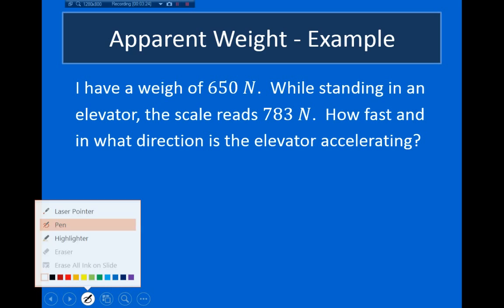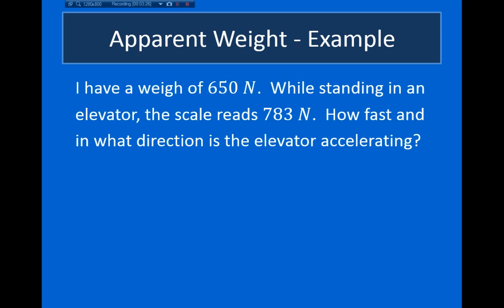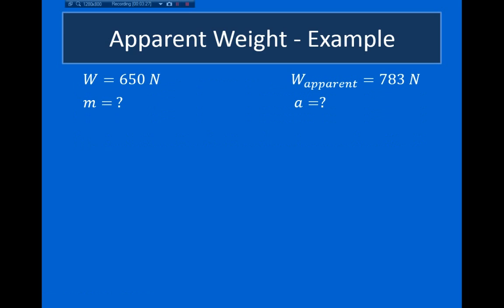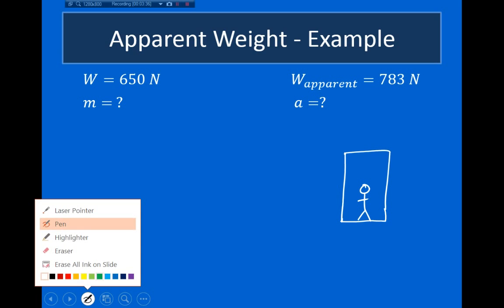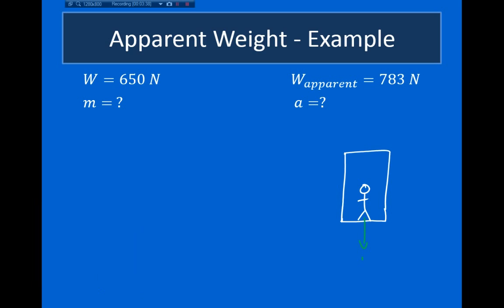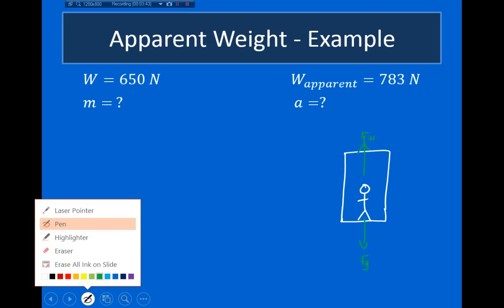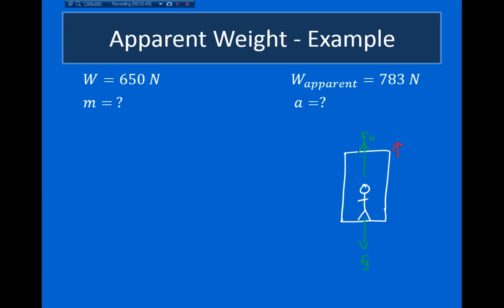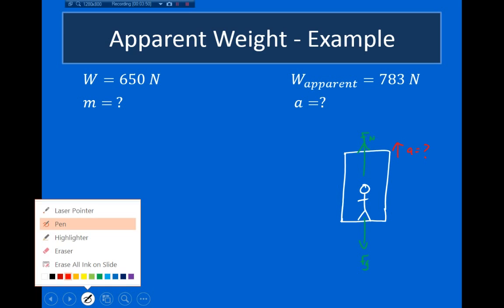So again, just drawing a free body diagram of what's going on. Here I am, I'm standing in an elevator, and there are two forces being exerted on me. There's a force due to gravity that points down, and there's a normal force that points up. And at the same time, I'm accelerating, and we want to find out what this acceleration is.